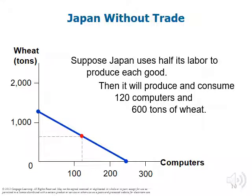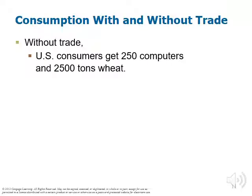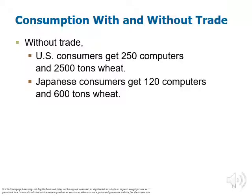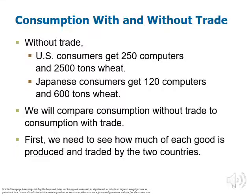Reviewing what we've done so far, we have consumption with and without trade. Without trade, U.S. consumers get 250 computers and 2,500 tons of wheat. Japanese consumers were getting 120 computers and 600 tons of wheat. We'll compare this consumption without trade to consumption with trade. But first, we need to see how much of each good is produced and traded by our two countries.